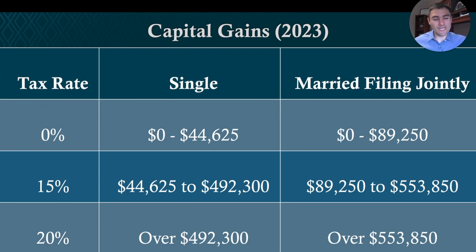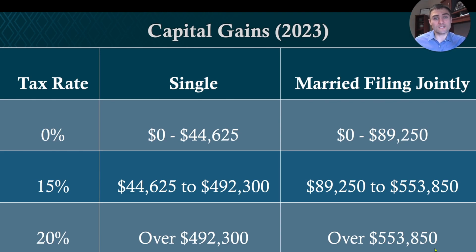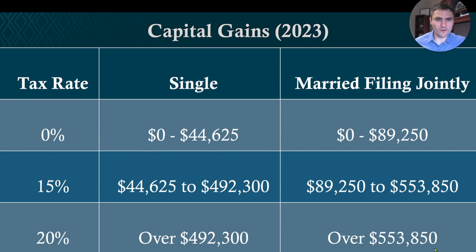If your income is really high, you may be in the 20% tax bracket. You may also be subject to something called net investment income tax, which is an extra 3.8% on top of that 20%. You could even find yourself subject to net investment income tax in the 15% bracket as well, causing you to pay an 18.8% tax rate on capital gains.